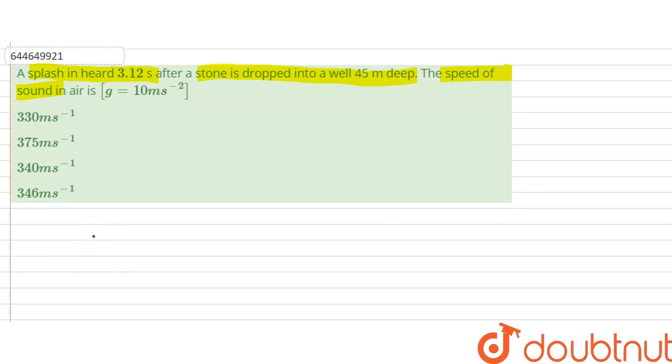The stone to reach the water surface is t1, let's say. So that would be equal to the square root of 2h by g. So when we input the values, that is square root of...